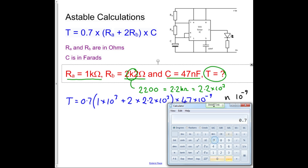So we go 0.7 multiplied by, open bracket, 1 times 10 to the 3, plus 2 times 2.2 times 10 to the 3, close brackets, multiplied by 47 exponent minus 9 equals, and we get a very small number. So we'll write that down.